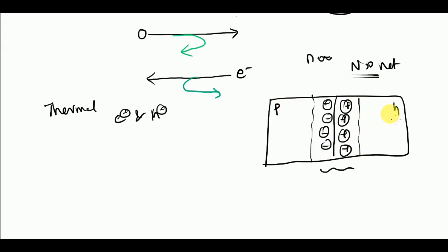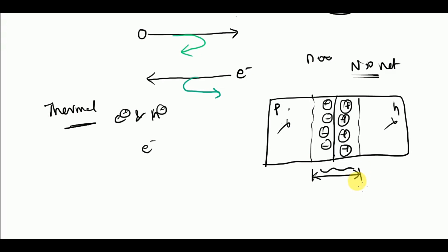Due to thermal generation there is always an electron-hole pair. If an electron-hole pair is generated in the P-type, the electron is a minority carrier and will immediately recombine with a hole. In the N-type also, an electron-hole pair is generated and the hole, being a minority carrier, will immediately recombine. Additionally, electron-hole pair generation also takes place in the depletion region itself.